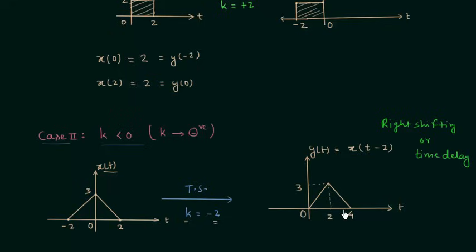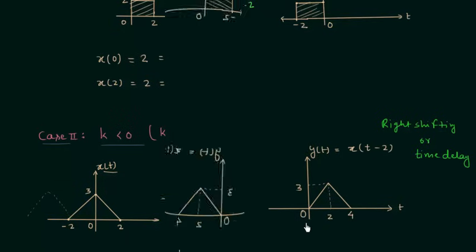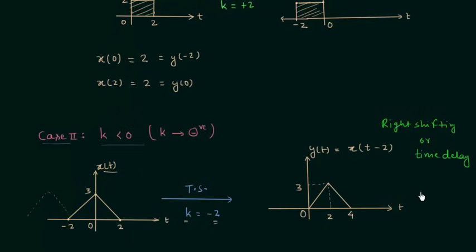In this case everything is delayed by 2 seconds. In case of time shifting the shape of the waveform remains the same — only the signal is shifted to the left or to the right. You can see we are subtracting 2 seconds from the instantaneous time, so our general instinct will tell us the waveform will be shifted one way, but in reality it shifts the other way. Shape will not change in time shifting.